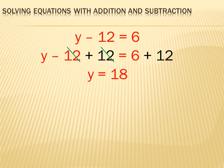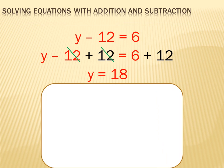Now we can test that solution. In the original equation, y minus 12 equals 6, and y equals 18. We can substitute 18 anywhere we see a y, so the equation becomes 18 minus 12 equals 6. Does 18 minus 12 equal 6? Yes, it does. So it works — we've checked our solution and it works. We did this solution horizontally, but most people learn to add and subtract vertically. So let's try it a different way — let's solve this vertically.